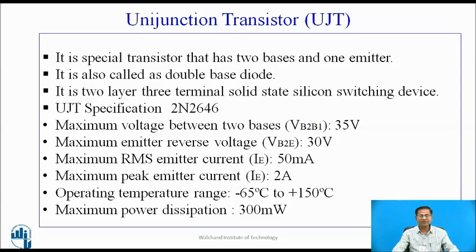UJT specification for 2N2646: Maximum voltage between two bases VB2B1 is 35V. Maximum emitter reverse voltage is 30V. Maximum RMS emitter current IE is 50 mA. Maximum peak emitter current IE is 2A. Operating temperature range from minus 65°C to plus 150°C and maximum power dissipation is 300 mW.